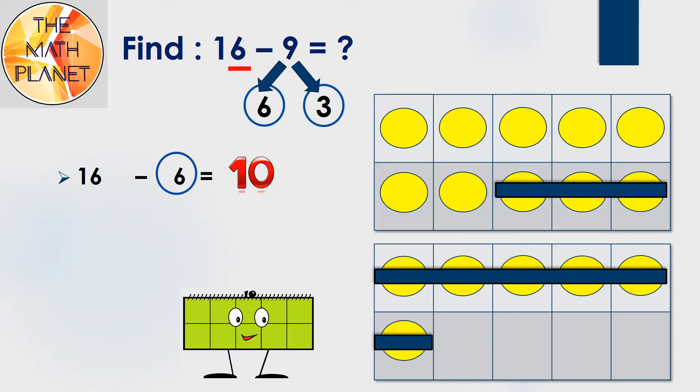16 minus 6 equals 10. This is the step in which I make 10. Then I'll subtract 3 more from the 10 to get the difference, which is 7. So 16 minus 9 equals 7.